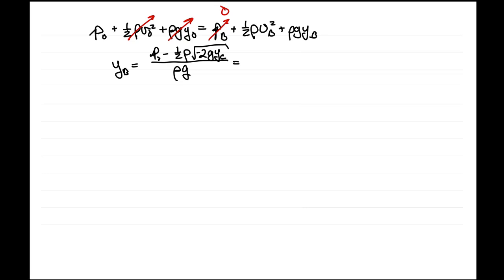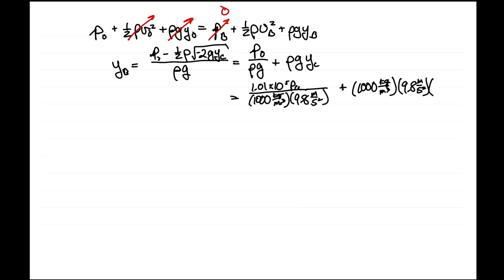Plugging in our numbers, we get atmospheric pressure divided by ρg plus density of water times g times Yc, which is -d - h2.